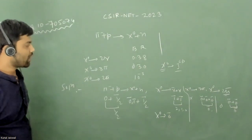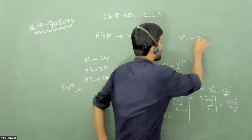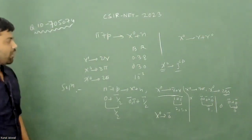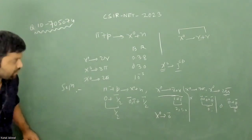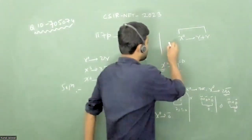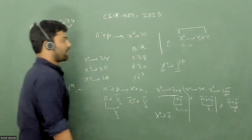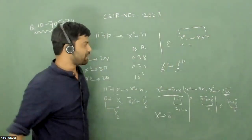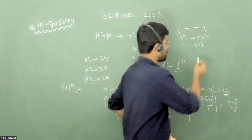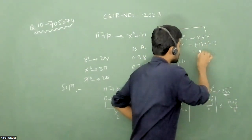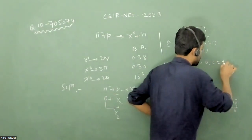Now we calculate the charge conjugation. Consider the EM interaction: x0 decays to gamma plus gamma. Since a photon is involved, this is an electromagnetic interaction, and charge conjugation is conserved in EM interactions. Let the charge conjugation of x0 be C. The charge conjugation of a photon is −1. Since charge conjugation is multiplicative and we have two photons, it is (−1)(−1) = +1. So the charge conjugation of x0 is C = +1.